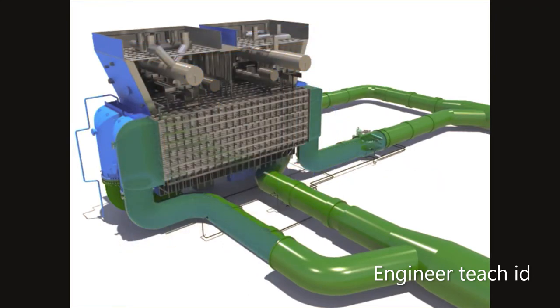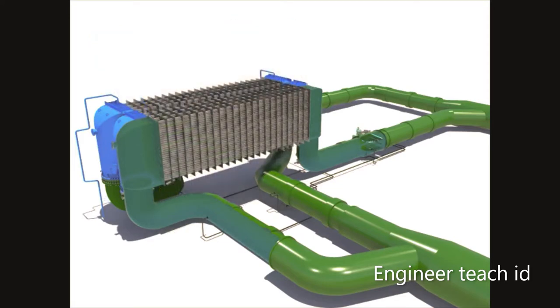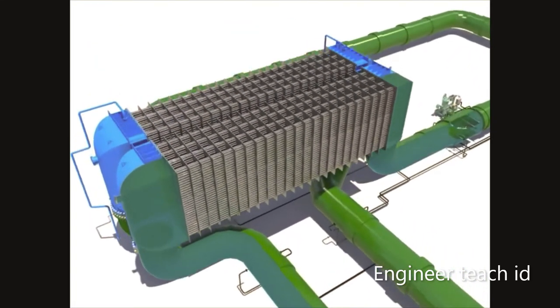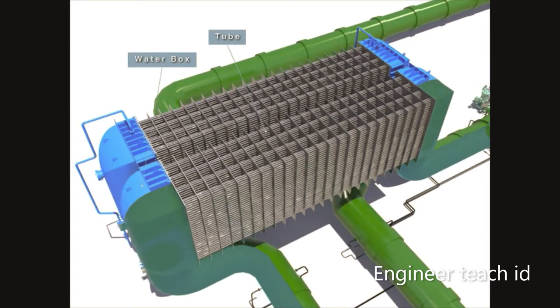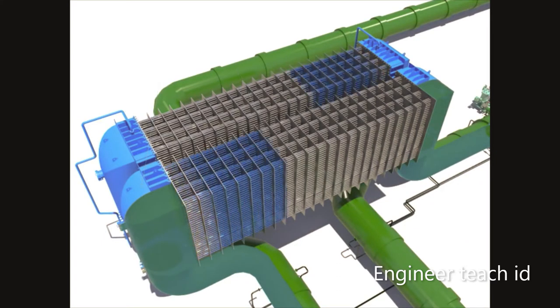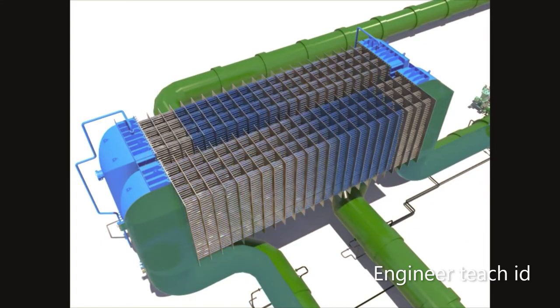When the seawater goes into the water box through the pipe, the cooling water flows to the tube and the exhaust gas of the low-pressure turbine or the steam from the bypass system flow to the shell.